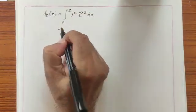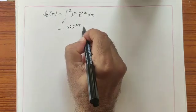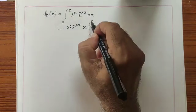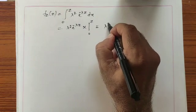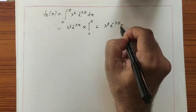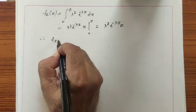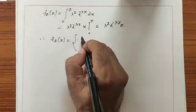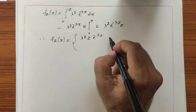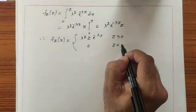Evaluating, we get λ²·e^(−λz)·z from the upper limit z, and 0 from the lower limit. Therefore, the probability density function of z is f_z(z) = λ²·z·e^(−λz) whenever z ≥ 0, and 0 whenever z < 0.